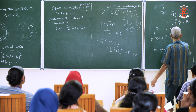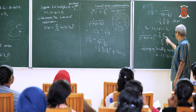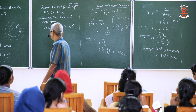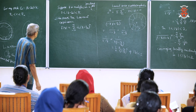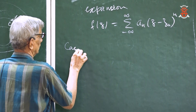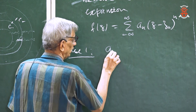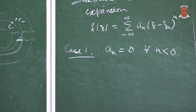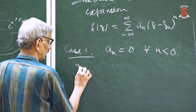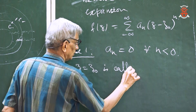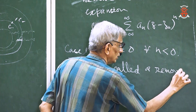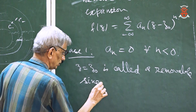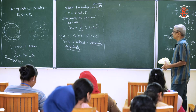First possibility: the principal part may not be there at all — all negative coefficients are zero, aₙ = 0 for all n < 0. Second possibility: there may be only finitely many negative coefficients which are non-zero. Third: there can be infinitely many negative coefficients which are non-zero. These three cases need to be considered separately.